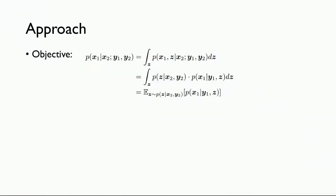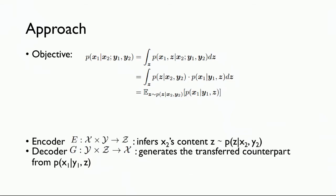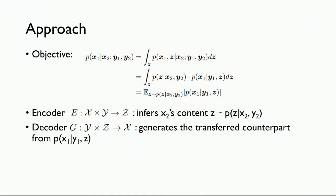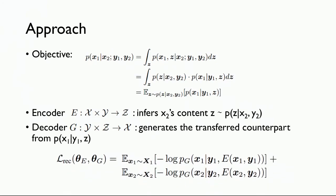They introduce a reconstruction loss to minimize the cross entropy of each recovered document. They propose a cross-alignment autoencoder that directly transforms from the source document to the target document. They assume that a sample from the original document X1 should have the same distribution as the transferred document from X2. So given X2, they transfer it to X1, and they want the transferred X1 to have the same distribution as the original X1.